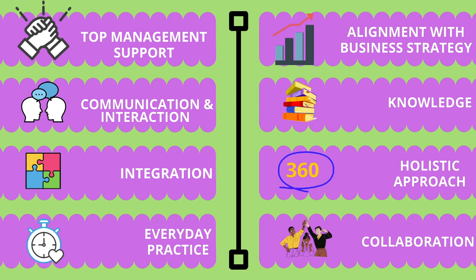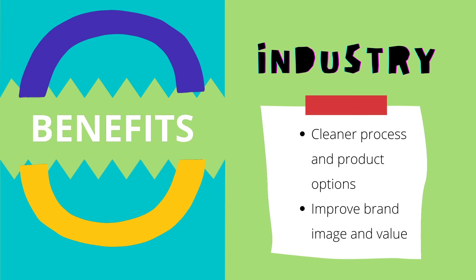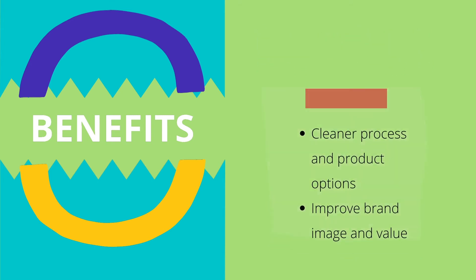Life cycle management can be conceptualized by considering three bottom-line sustainability. The benefits for the industrial sector include integrating the life cycle perspective so that organizations are able to apply and develop cleaner processes and product options, which will improve brand image and value for not only global market players but also small producers and suppliers.